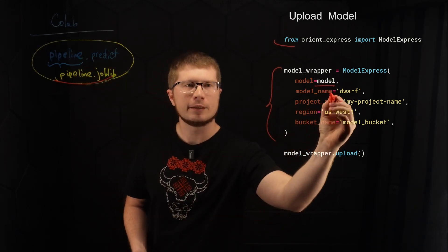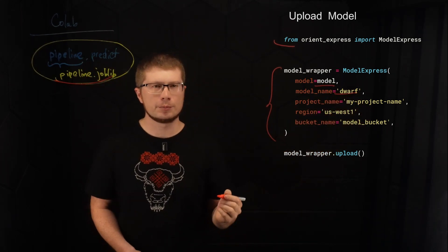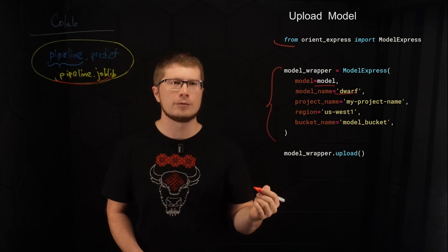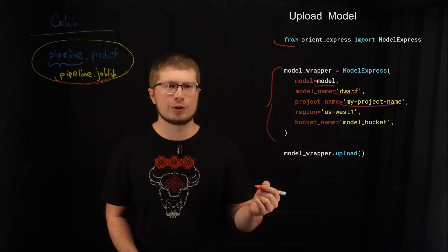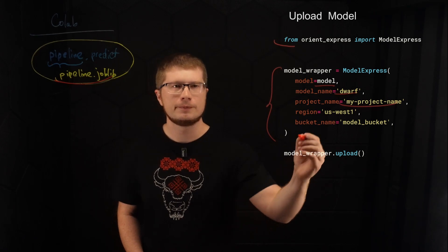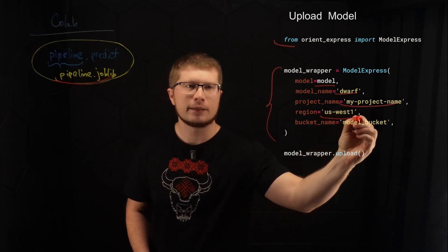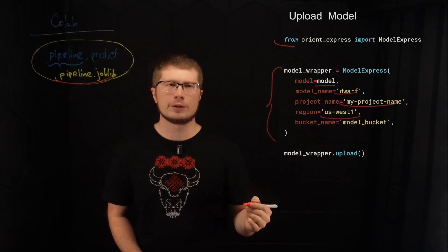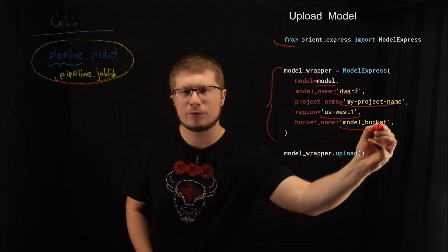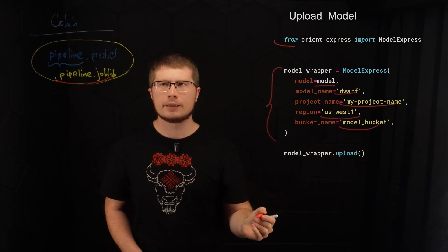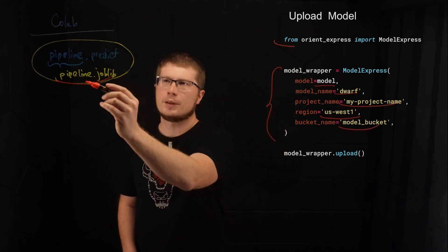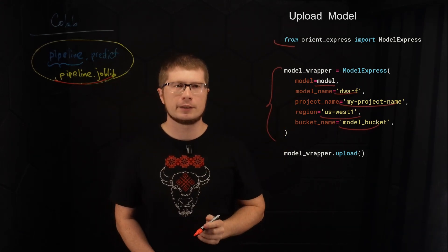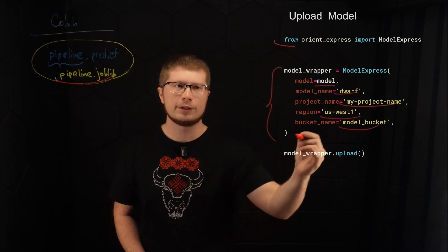The second one is a model name that we wanted to be available in the model registry. The project name is a name of the project in Google Cloud. And the region is the region where we want this model to be available. And the last one is a bucket where Orient Express will temporarily save pipeline.joblib artifact. So we need to have access to this bucket.